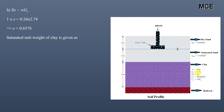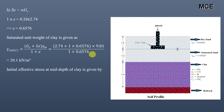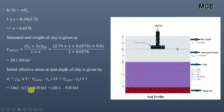The saturated unit weight of clay is given by (Gs + S·e)·γw / (1 + e). Substituting values gives γ_sat = 20.1 kN/m³. The initial effective stress at mid-depth of the clay is calculated as: γ_dry × 1 + (γ_sat_sand − γw) × 1 + (γ_sat_clay − γw) × 1. With γ_dry for sand = 14, γ_sat for sand = 17, γw = 9.81, and γ_sat for clay = 20.1, the initial effective stress = 31.48 kilopascals.